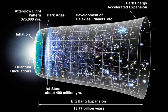Independent lines of evidence from type Ia supernovae and the CMB imply that the universe today is dominated by a mysterious form of energy known as dark energy, which apparently permeates all of space. The observations suggest 73% of total energy density of today's universe is in this form. When the universe was very young, it was likely infused with dark energy, but with less space and everything closer together, gravity predominated, and it was slowly braking the expansion.